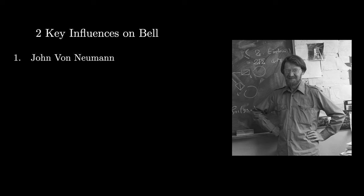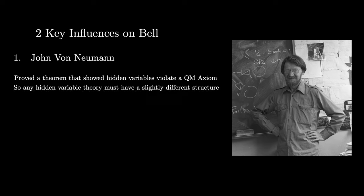The first was a theorem proved by John von Neumann in a textbook titled, The Mathematical Foundations of Quantum Mechanics, a monumental work where he provides the first rigorous mathematical framework for quantum mechanics. At one point in the book, von Neumann proves a very technical theorem that essentially says any theory that contains hidden variables must violate one of the axioms of quantum mechanics. Namely, the axiom that physical observables are represented by operators that exist in a Hilbert space. So a hidden variable theory is possible, but it must necessarily have a slightly different structure.